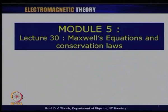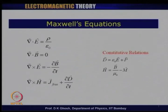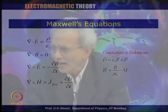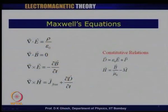We will continue making observations based on these. Last time we completed deriving all four Maxwell's equations: del dot E equals rho over epsilon_0, or alternatively del dot D equals rho_free; del dot B equals 0 (no magnetic monopoles); Faraday's law del cross E equals minus dB/dt; and the Ampere-Maxwell law del cross H equals free current plus dD/dt. The constitutive relations are D equals epsilon_0 E plus P, and H equals B over mu_0 minus M.